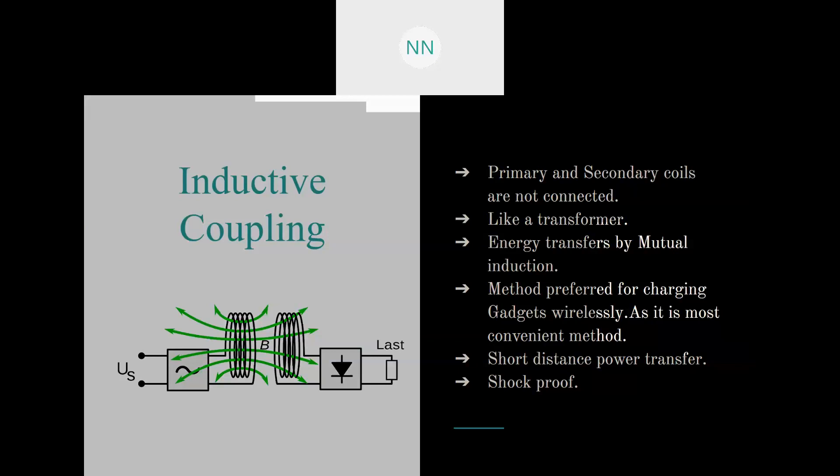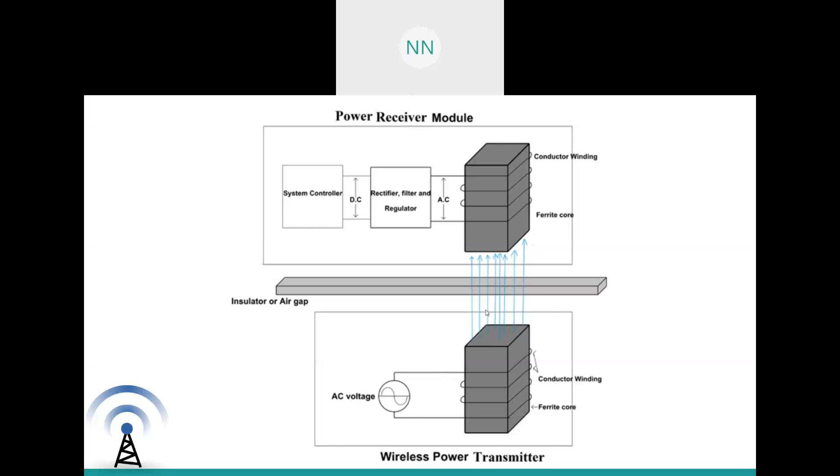This is a basic diagrammatic representation of inductive coupling. As you can see here, there is an AC voltage supply supplied to the conductor, and the conductor is wound around a ferrite core. This is the transmitting section and this is the receiving section, and there is an air gap or an insulator in between them. When AC current flows through this conductor, there will be magnetic field produced. This magnetic field will be concentrated to the ferrite core, and then the energy will be emitted. When a receiver module is brought near to this magnetic field, from Faraday's law of induction, EMF will be induced in the receiving module. Using rectifier, filters, and regulators, the AC current obtained can be converted back to DC.